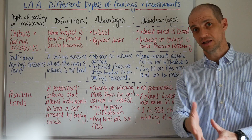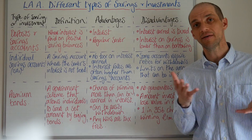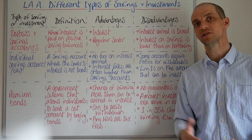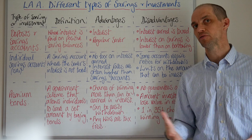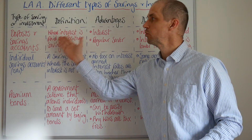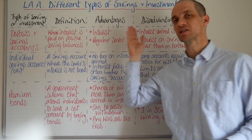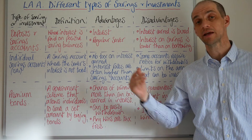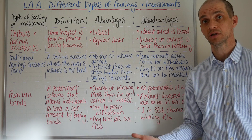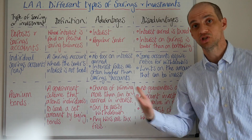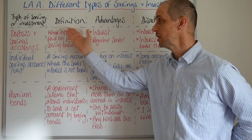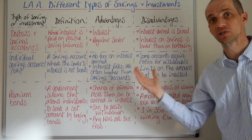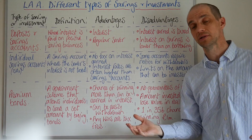You'll need to check different banks and look at the different products available, as these vary at different times. When it comes to savings accounts, this is really about allocating money to save for a particular reason, or just for a rainy day. This is where interest is paid on positive saving balances.